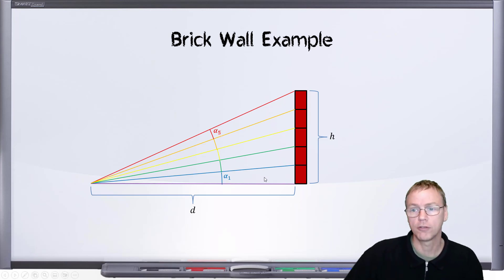In order to resolve an individual brick apart from the one next to it, we would be looking for the angular size of each individual brick to be greater than the Rayleigh criterion. However, we'll note that the bricks being all the same color will make it extremely difficult to actually resolve one from another.